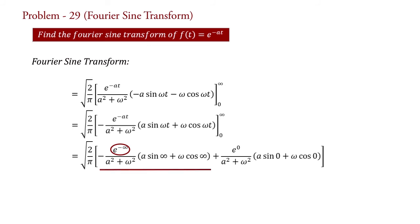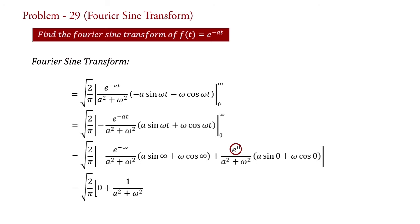So we put 0 for the upper limit. For the lower limit, e raised to 0 equals 1. Therefore we have 1 upon (a squared plus omega squared), into bracket: sine(0) equals 0, so that term is 0; and cos(0) equals 1, so we put omega.